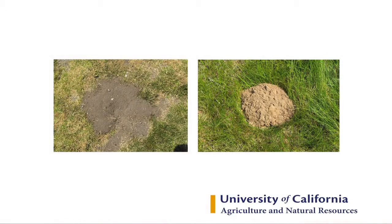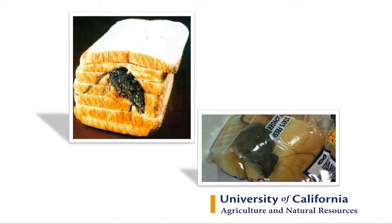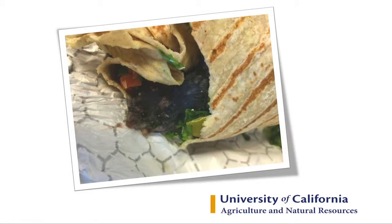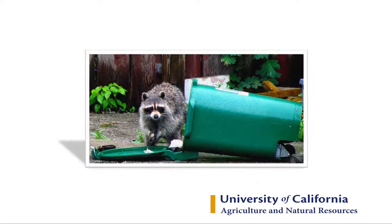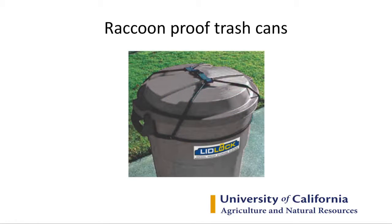Gophers and moles cause significant damage to turf. Rodents get into our food — very unpleasant. Other pests get into our trash and knock things over, requiring expensive management tools. They also cause disease. Rat bite fever is one example, and allergens from mouse and rat dander have been linked to childhood asthma.